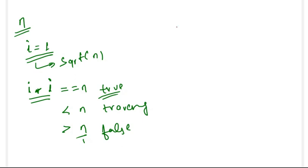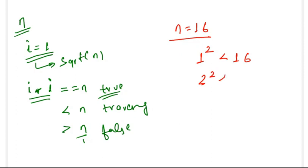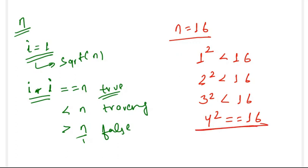Let's understand with an example — say n is 16. First we check: 1 squared is smaller than 16, so we move to 2. 2 squared is also smaller than 16, so we move to 3. 3 squared is also smaller than 16, so we move to 4. Now 4 squared equals 16, which means 4 is the square root of 16, making 16 a perfect square, and we return true.